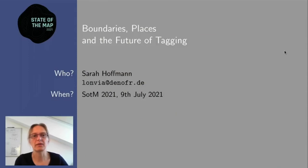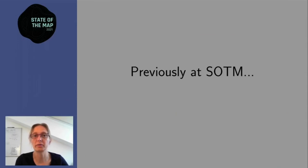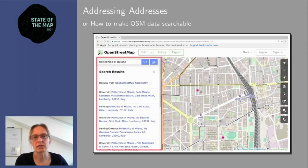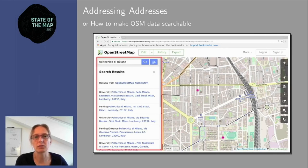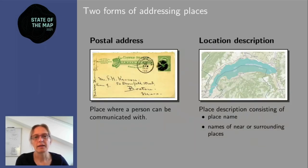Welcome to this talk: Boundary Places and the Future of Tagging. My name is Sarah Hoffman, and if this talk sounds familiar you're not completely wrong, because this is a continuation of a talk I held in Milan in 2018 called Addressing Addresses. I'm the maintainer of Nominatim Geocoder, which you've likely used because it powers the search box on the main OpenStreetMap site — you type some text and expect it to find the right place.